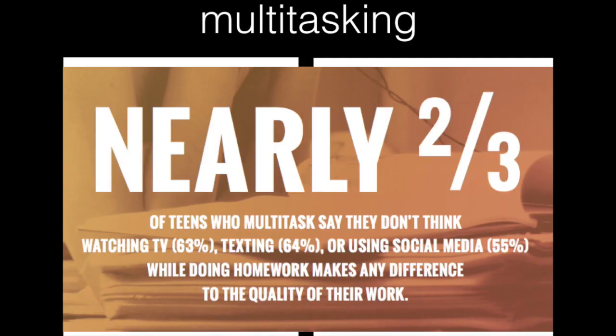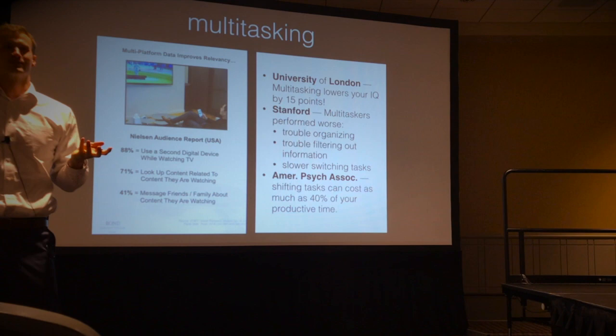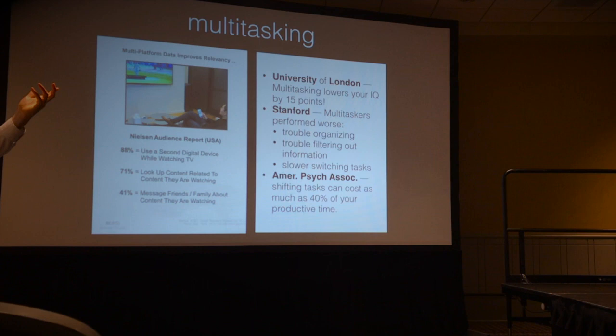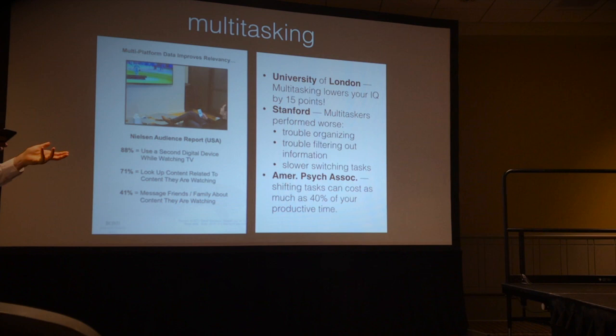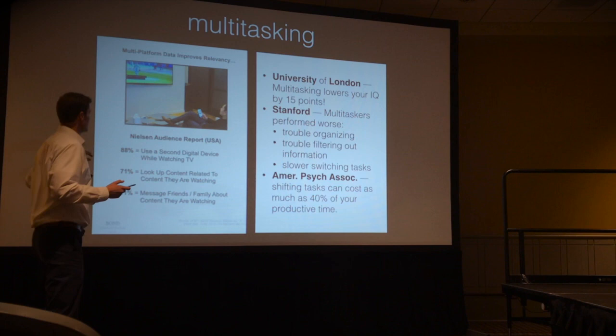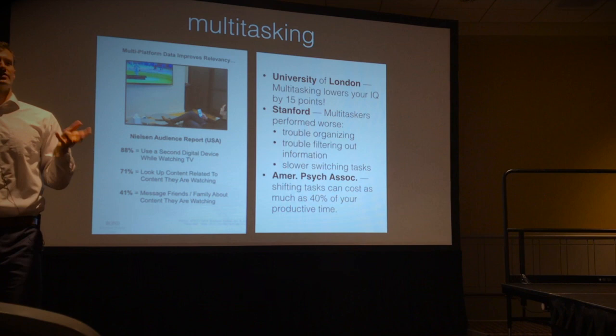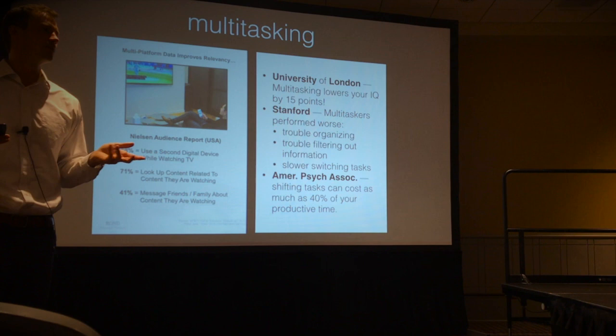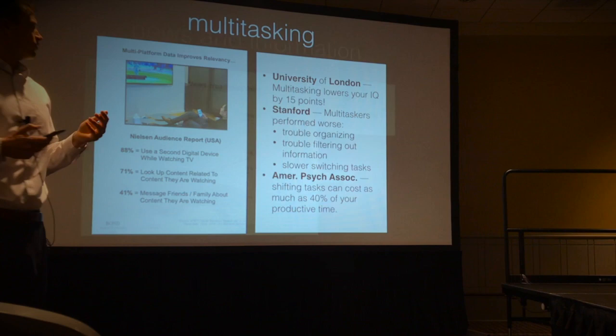Let's start with literacy. On multitasking — from that same Common Sense Media survey — two-thirds of teens who multitask say they don't think watching TV, texting, or using social media while doing homework makes any difference in the quality of their work. But science says it does: a University of London study found it can lower your IQ by up to 15 points. Stanford found multitaskers perform worse at organizing and filtering information. The American Psychological Association found switching tasks can cost about 40% of productive time. And 88% of adults use a second screen while watching TV — we all think we can multitask, and we can't.